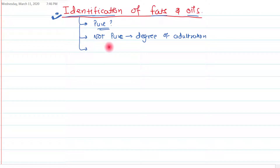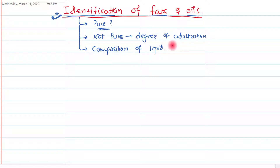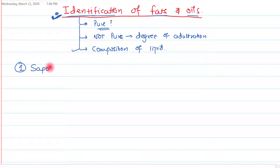When we come across some new lipid and we want to identify the composition of this lipid, we can primarily apply various techniques of identification of fats and oils. So there are many techniques for the identification of fats and oils. The first technique is the saponification number.